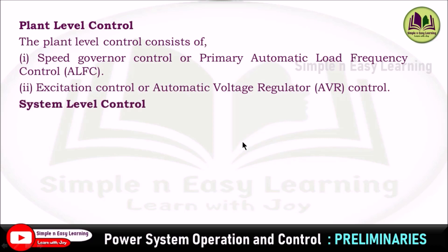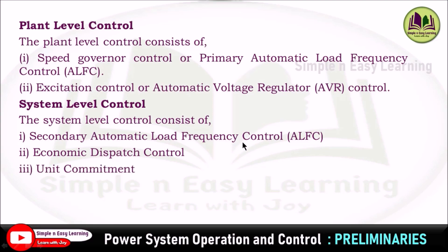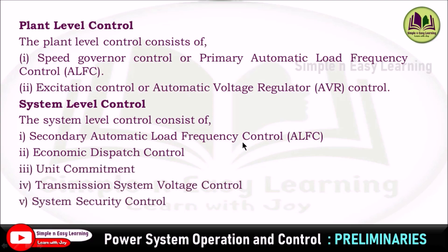In system level control we have secondary automatic load frequency control, economic dispatch control, unit commitment, transmission system voltage control, and system security control. In addition to that we have voltage and reactive power compensation, HVDC transmission control, and FACTS control in the transmission network.